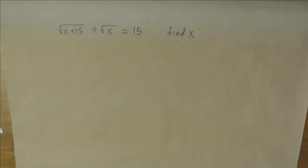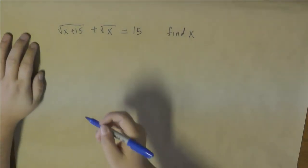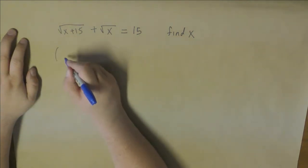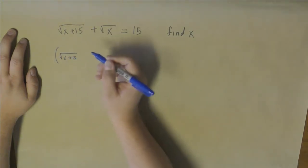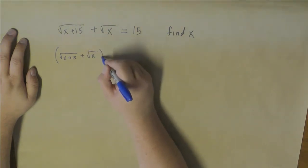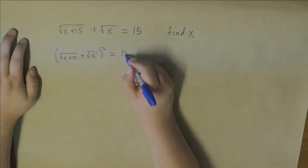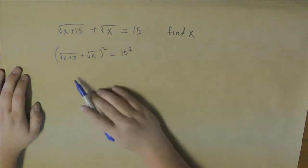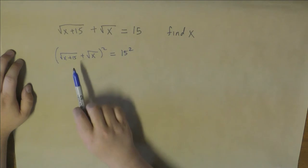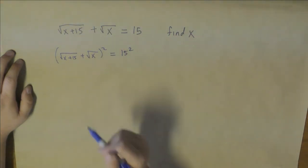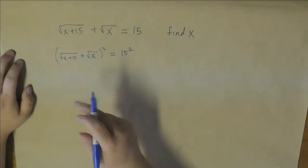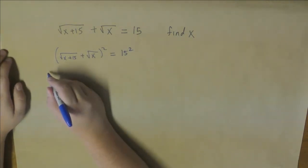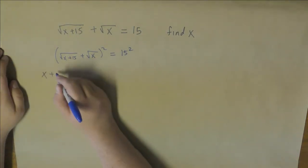So the first thing we need to do is we're going to have to square both sides. That's easy enough. So when you square this, you're going to get x plus 15 for the first bit.